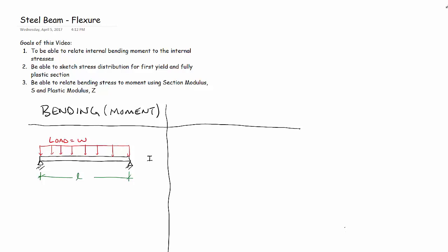Greetings. In this video, we're going to talk about steel beam bending or flexure. At the end of this video, you should be able to relate internal bending moment to internal stresses. We're going to do that by sketching a stress distribution inside the beam. We're going to look at when it starts to yield — when some of the steel gets to that yield point — and when the whole section goes fully plastic. Finally, we'll be able to relate this stress to the moment using what's called a section modulus and a plastic modulus.